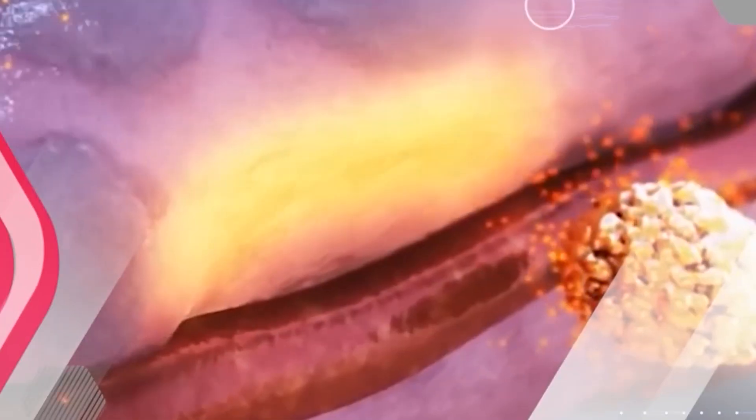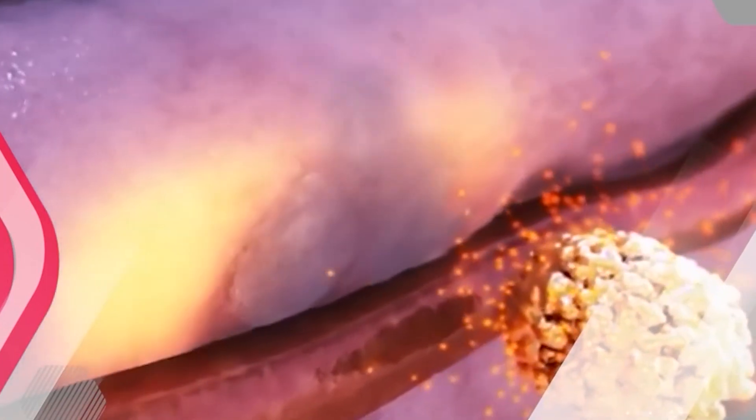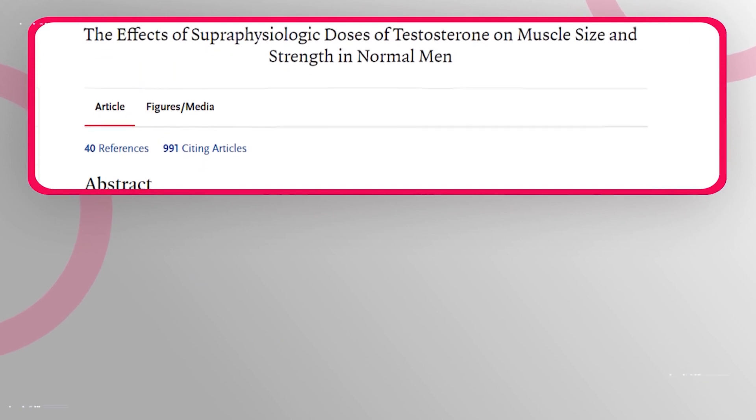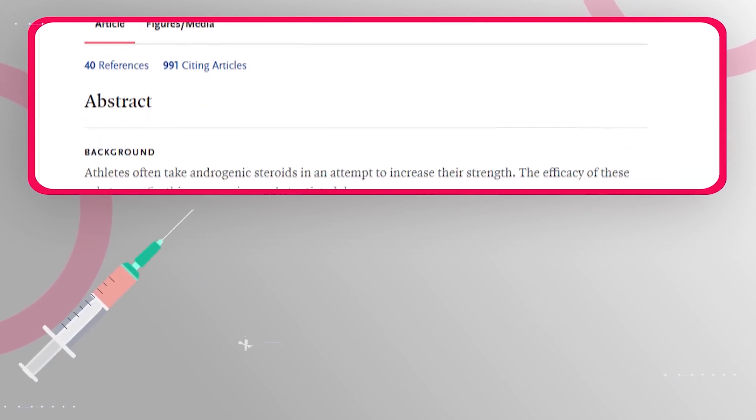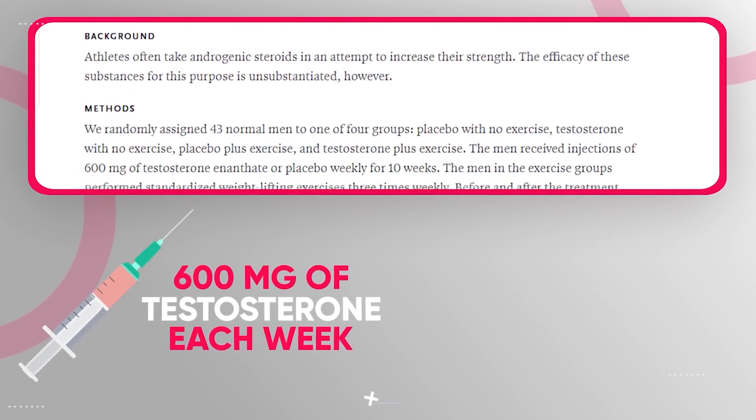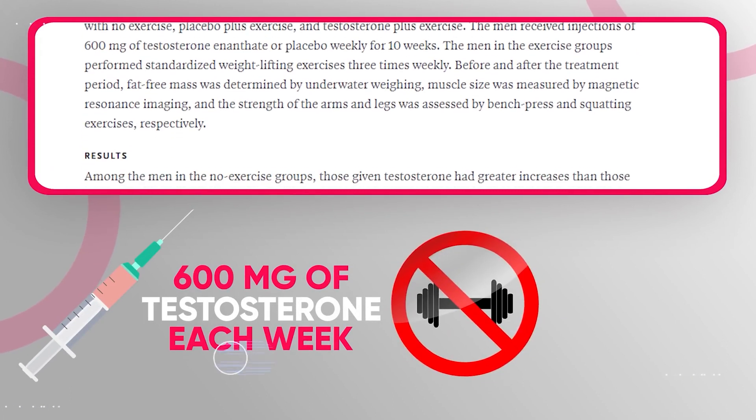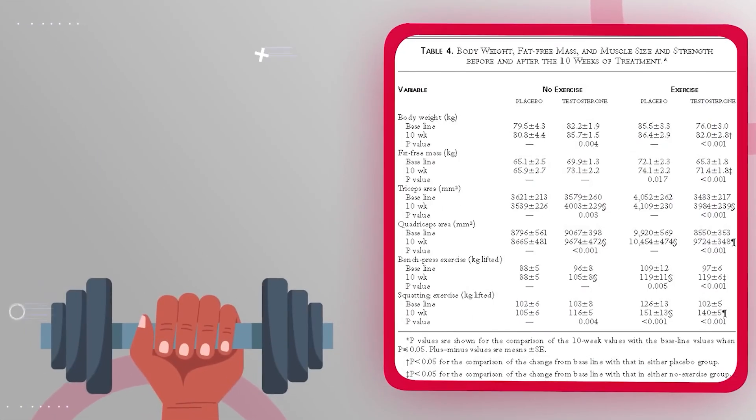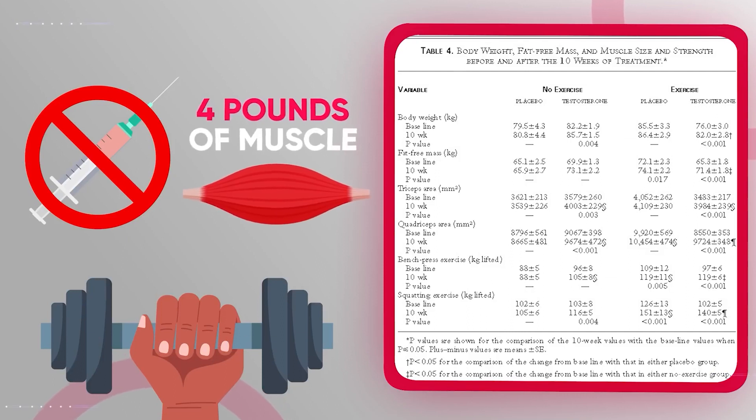When morphine testosterone binds to muscle androgen receptors, intense circumstances are created for muscle growth. Research published in the New England Journal of Medicine discovered that providing men 600 mg of testosterone per week without resistance training caused them to acquire 7 pounds of muscle. Meanwhile, another group of guys who did progressive resistance training without steroids acquired only roughly 4 pounds of muscle.